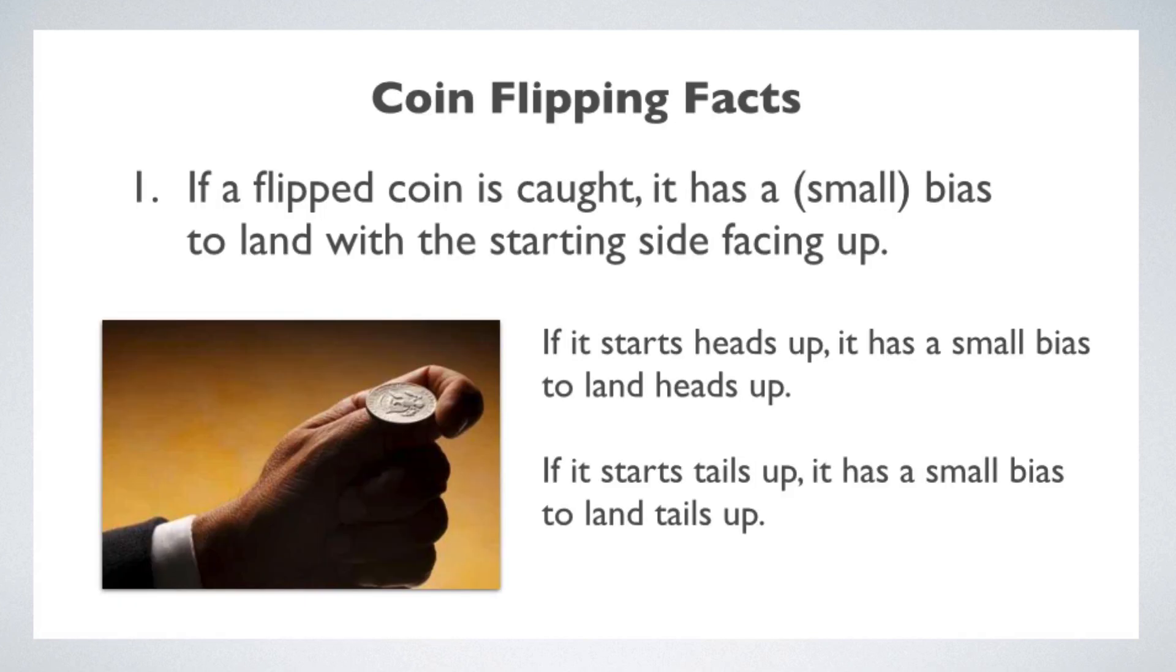Now here are some interesting facts about coin tossing. If a flipped coin is caught, there is a small bias to land with the starting side facing up. So if it starts out heads up, there is a small bias to land heads up, and vice versa. Where does this bias come from? It's actually a subtle effect of the physics. Coins spin end over end, but they also spin like a pizza being tossed, and if they spin, then they'll also wobble. This wobble is what physicists call precession. The effects of precession change the dynamics, and the result is a bias in favor of the starting orientation.